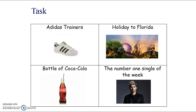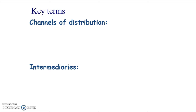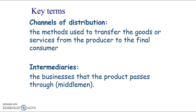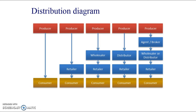The point is there are so many different channels to get these products through. That leads us to our key terms: channel of distribution — the methods used to get the good or service from the producer to the final consumer. Intermediaries is a more A-level word, but it means the businesses the product passes through — the middlemen — to get to the final consumer.